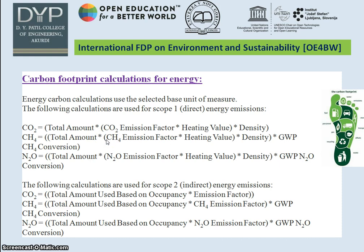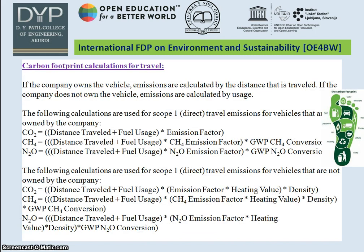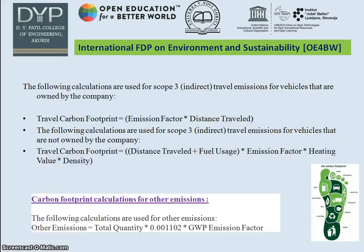Here are the formulas for calculating greenhouse gases emitted. These are the carbon footprint calculations for energy used for Scope 1 and Scope 2, where Scope 1 covers direct energy emissions and Scope 2 covers indirect energy emissions. Carbon footprints can be calculated for all the scopes. There are also carbon footprint calculations for the travel component, again for Scope 1, Scope 2, and Scope 3 — that is, travel emissions for vehicles owned by the company. Next is the carbon footprint calculation formula for other emissions, such as through corporate waste. All these formulas for energy, travel, and waste give a total estimation of CO2 emissions for a particular application.